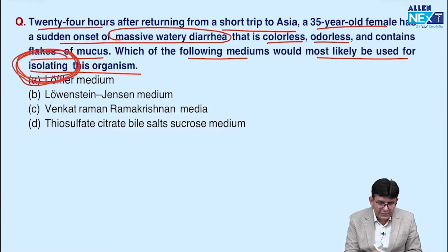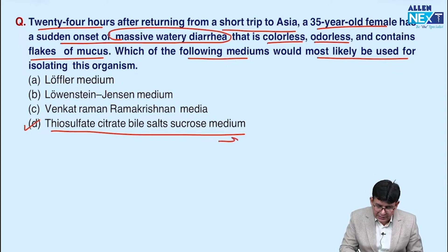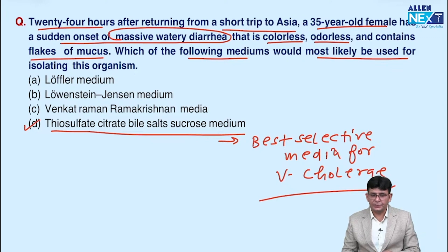don't get after the answers. The question is regarding isolating the organism and the answer is D only. It is D. Why is it D? Because this is the best selective media for Vibrio cholerae. And we are talking about cholera in this particular question. It is cholera and it is being done by this organism,